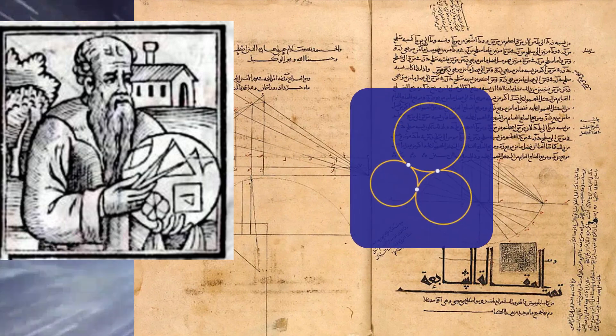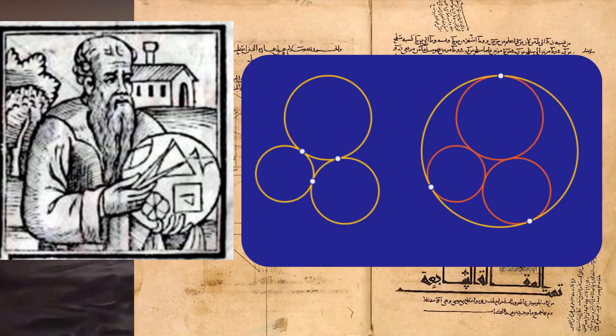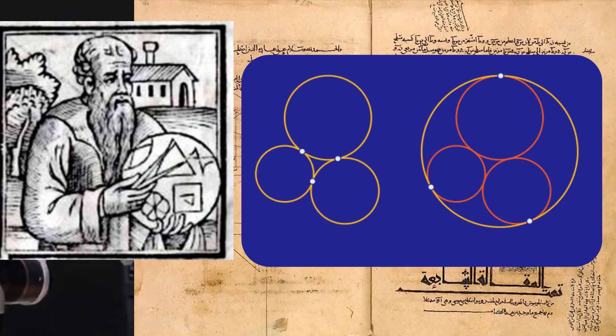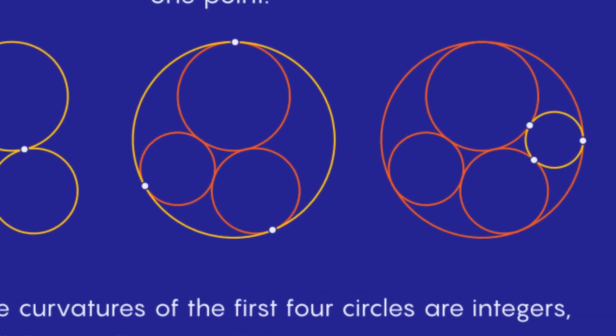To illustrate, consider aligning three coins so that they touch, drawing a larger circle around them that touches all three coins. This concept extends to multiple circles, forming intricate patterns known as packings.